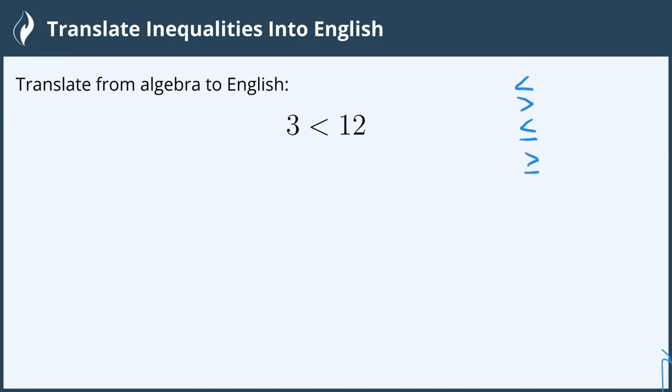The way I like to remember which is which is that a lesser than sign is in the same direction as the letter L, so it stands for lesser than, or lesser than or equal to, which has the line underneath of it.